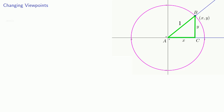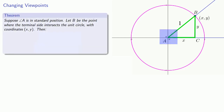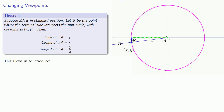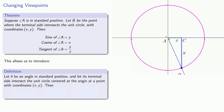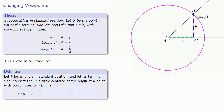So now let's change our viewpoint slightly. Suppose angle A is in standard position. Let B be the point where the terminal side intersects the unit circle with coordinates x, y. Then the sine of A is equal to y, the cosine of A is equal to x, and the tangent of A is equal to y over x. And what's useful to keep in mind is that while this was determined by assuming angle A was acute, we can still find these values x, y, and y over x whatever the measure of angle A is. This allows us to introduce the following: let theta be an angle in standard position, and let its terminal side intersect the unit circle centered at the origin at a point with coordinates x, y. Then the sine of theta is y, the cosine of theta is x, and the tangent of theta is y over x.